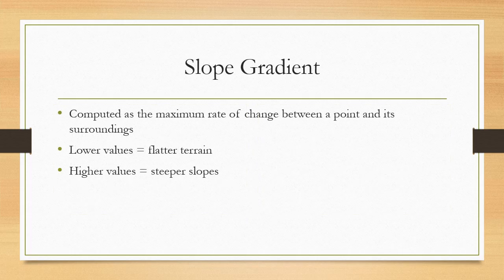How do we work with slope gradient? It is computed as the maximum rate of change between a point and its surroundings, where flatter terrain is represented by lower values and higher values indicate steeper slopes.